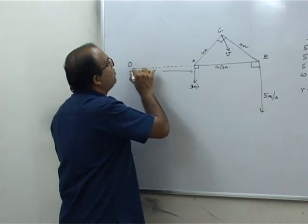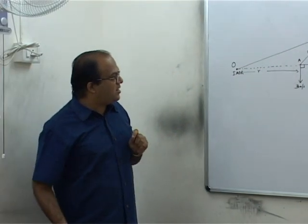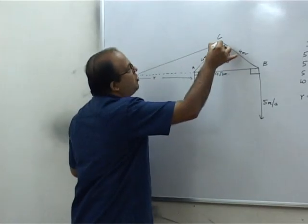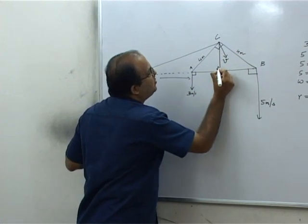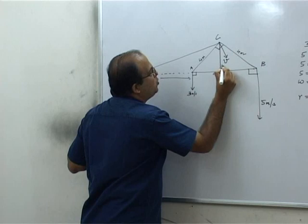Now our job is to find the distance OC. There are many ways of finding that. The simplest method is by dropping a perpendicular from here. The length of this perpendicular will be 4 cos 45 degrees, that is 2√2 meters.